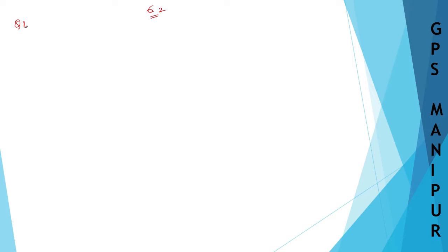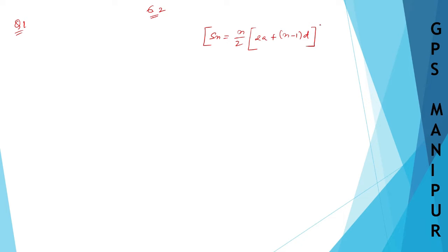We are dealing with exercise 6.2, question number 1. The question says find the sum of the following AP. Before starting, let me write down the formula. The formula is Sn = n/2 × (2a + (n-1)d). This is the formula we are going to use in this particular question.